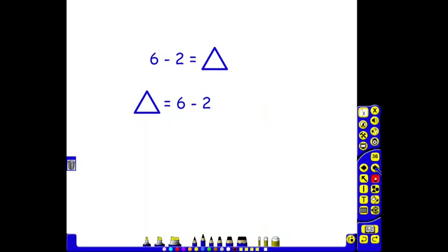Also in subtraction, the children will have numbers represented by shapes or symbols. Here we have 6 take away 2 equals, and we've got the triangle. 6 take away 2 equals 4.